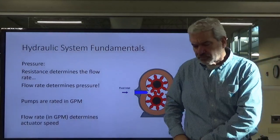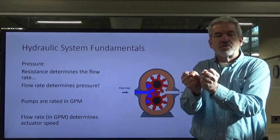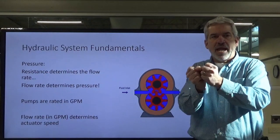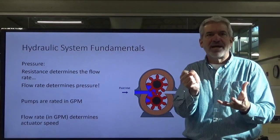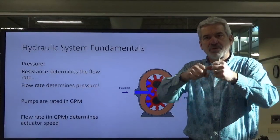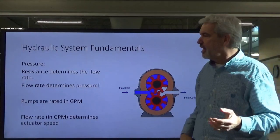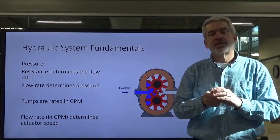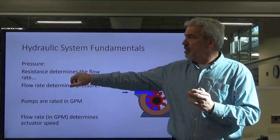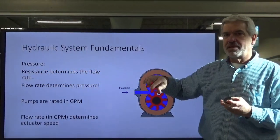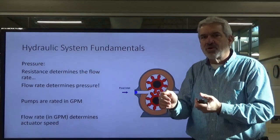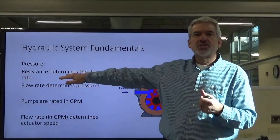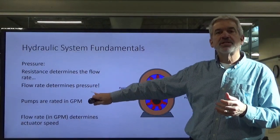A couple of rules to remember: resistance determines the flow rate. Think about a garden hose — if we kink that garden hose, we shut the flow off and restrict it. That resistance causes pressure to build up and back up on us. So our pressure builds because we've kinked that hose and we no longer have flow. Similarly, with our flow control valve, we were controlling flow by adding resistance — closing that orifice more and more, creating more resistance and throttling our flow back. Resistance determines the flow rate, and the flow rate will then determine the pressure.